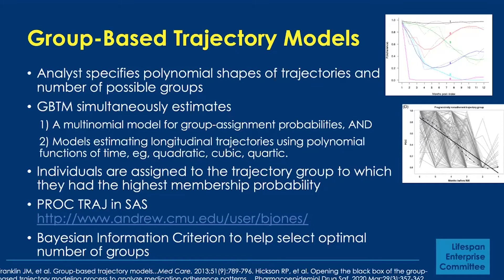Bayesian information criteria are used to help select the optimal number of groups. Group-based trajectory models have been used quite a bit in pharmacoepidemiology to study adherence to medications over time — trying to separate different patterns of individuals' adherence over time across a variety of different medications.